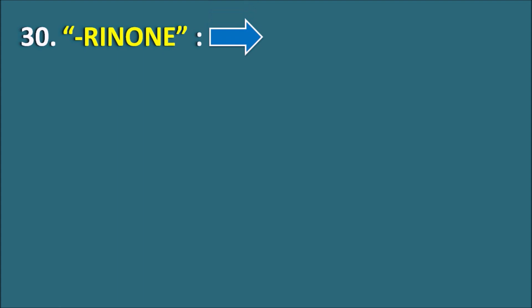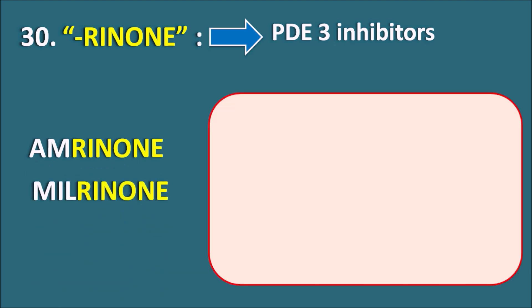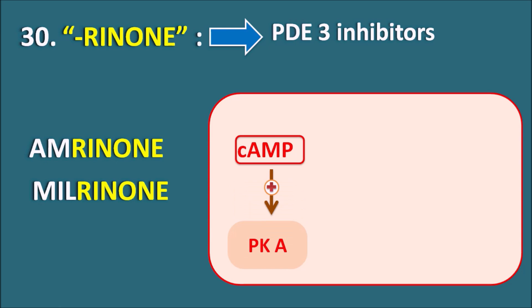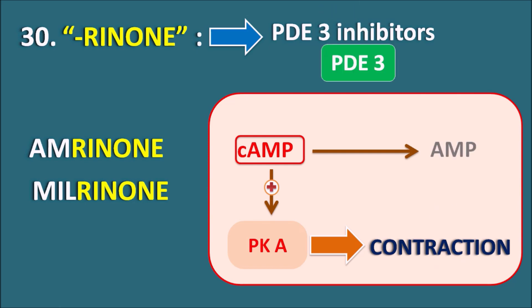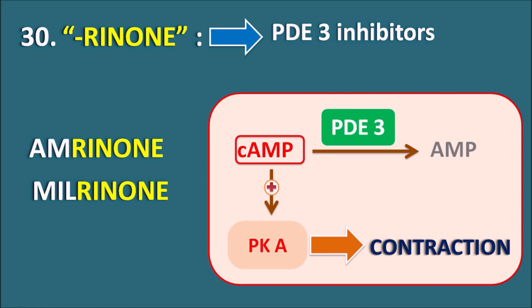The 30th suffix is Renone. Renone indicates they are phosphodiesterase type 3 inhibitors. We have two drugs: Amrinone and Milrinone. These drugs act mainly on the cardiac muscle. Cyclic AMP activates protein kinase A, which increases calcium entry responsible for cardiac muscle contraction. Cyclic AMP is metabolized to AMP by phosphodiesterase type 3 enzymes. Amrinone and Milrinone block this phosphodiesterase type 3 enzyme in the cardiac muscle, thereby increasing cyclic AMP levels, increasing calcium levels, and resulting in increased force of contraction. These drugs are used as inotropic agents in the treatment of congestive heart failure.